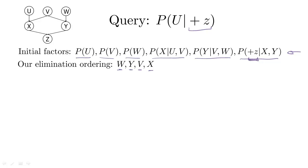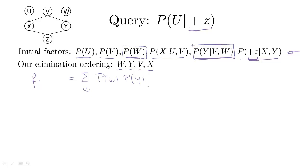Let's start. When we eliminate W, we first have to join on W and form a new factor. The factors with W in them are P(W) and the conditional of Y given V and W — only two factors. To eliminate W, we generate a new factor F1, equal to the sum over all instantiations of W of the product of those factors. These factors contain the variables Y and V, so our new factor F1 will be over the variables Y and V. In doing so, we got rid of those two factors.